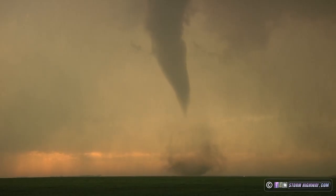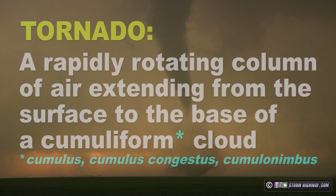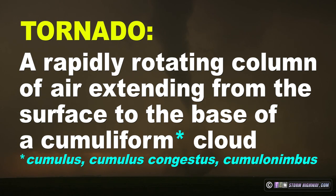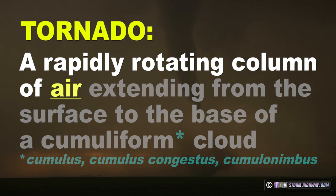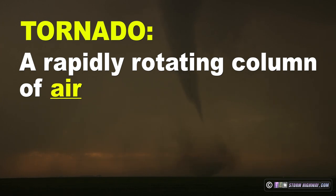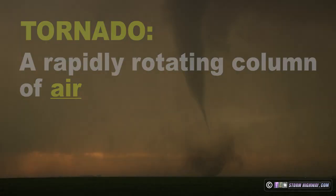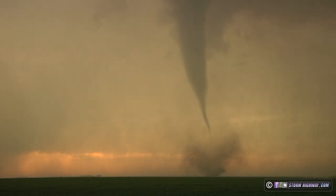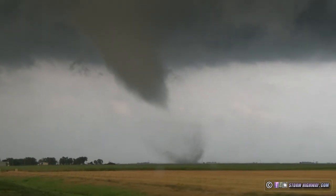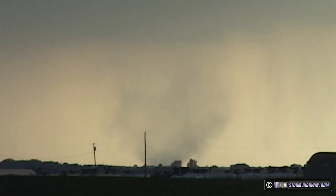The official definition of a tornado is a rapidly rotating column of air under a thunderstorm, attached to the base of the cloud and in contact with the ground. Did you catch that? A tornado is a circulation of air. It's the fast-moving air in this circulation that makes a tornado, and since air is normally invisible, you don't need a funnel reaching the ground, or even a funnel at all, to have a tornado.